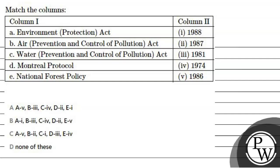The third question says match the volumes. In the first column is Environment Protection Act. In the second column is Air Prevention and Control of Pollution Act. Third is Water Prevention and Control of Pollution Act. Fourth is Montreal Protocol. Fifth is National Forest Policy. In the second column there are years: 1988, 1987, 1981, 1974, and 1986.